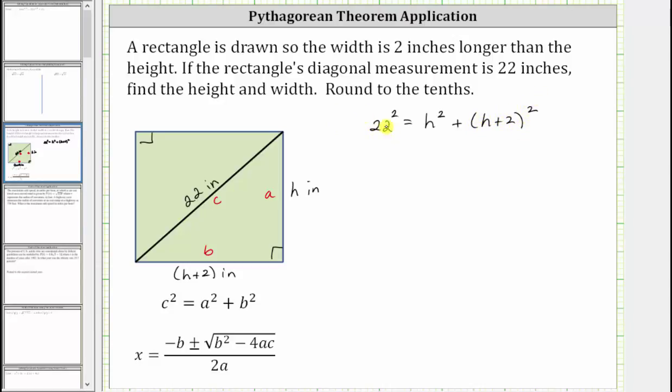22 squared equals 484. So we have 484 equals h squared plus, there are no shortcuts here. We have to write out two factors of h plus two, and then multiply, which will give us four products. We distribute the h, then distribute the two.